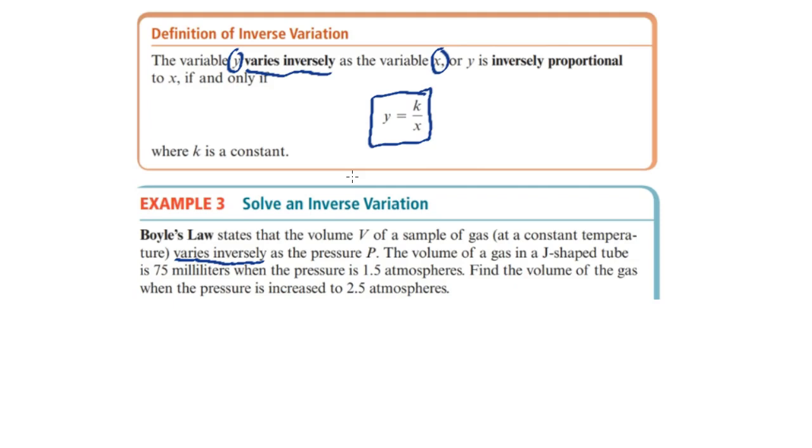So let's read through the problem. Boyle's law states that the volume v of a sample of gas varies inversely as the pressure p. So we write it like this: v equals k divided by p, similar to y equals k divided by x.